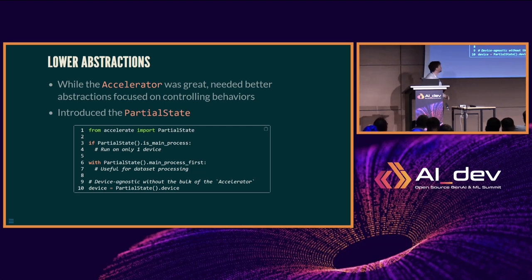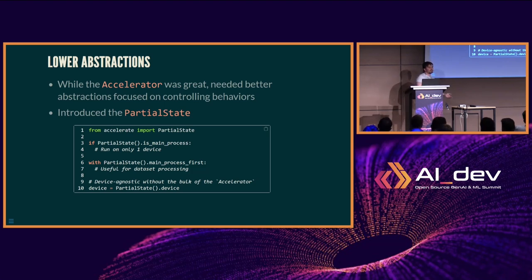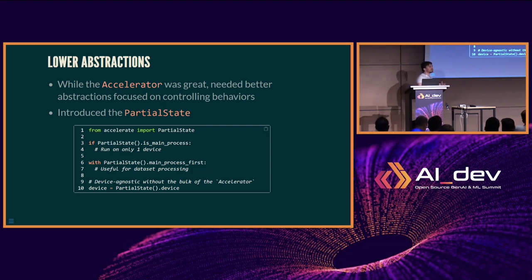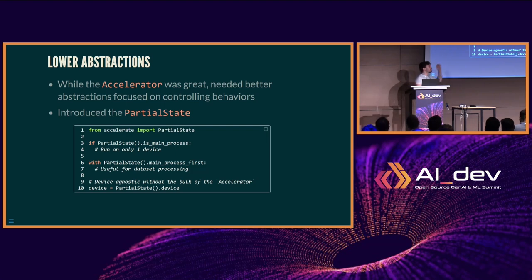A few basic functions: we have on_main_process, which runs only on a single compute — on a single GPU it just prints. We also have with partial_state main_process_first, which is handy when processing datasets — you'd rather tokenize your dataset once rather than ten times for ten GPUs. And partial_state.device handles the extraction of the device agnostically, so rather than saying .to('cuda') or .to('xpu'), you just say use the device. If you don't want to use the full Accelerator, that can get you 90% of what you want.